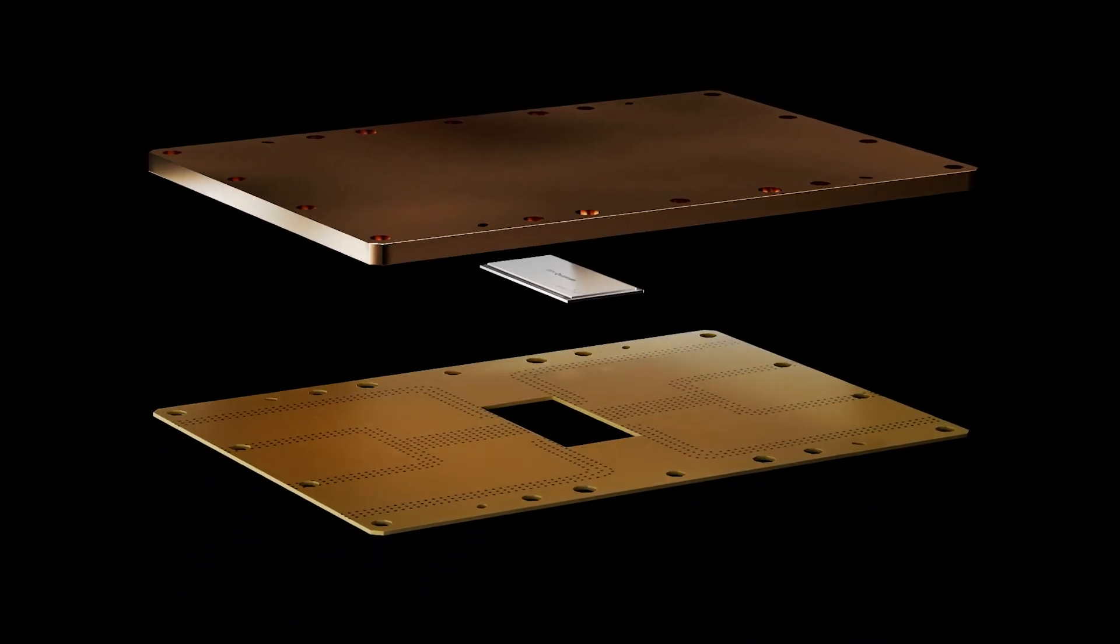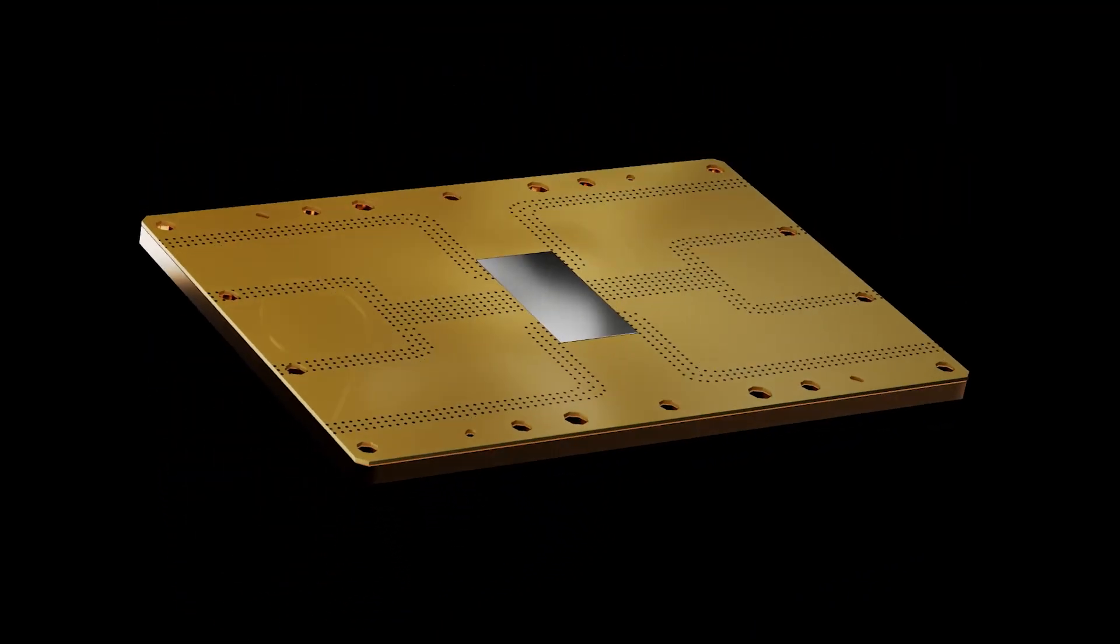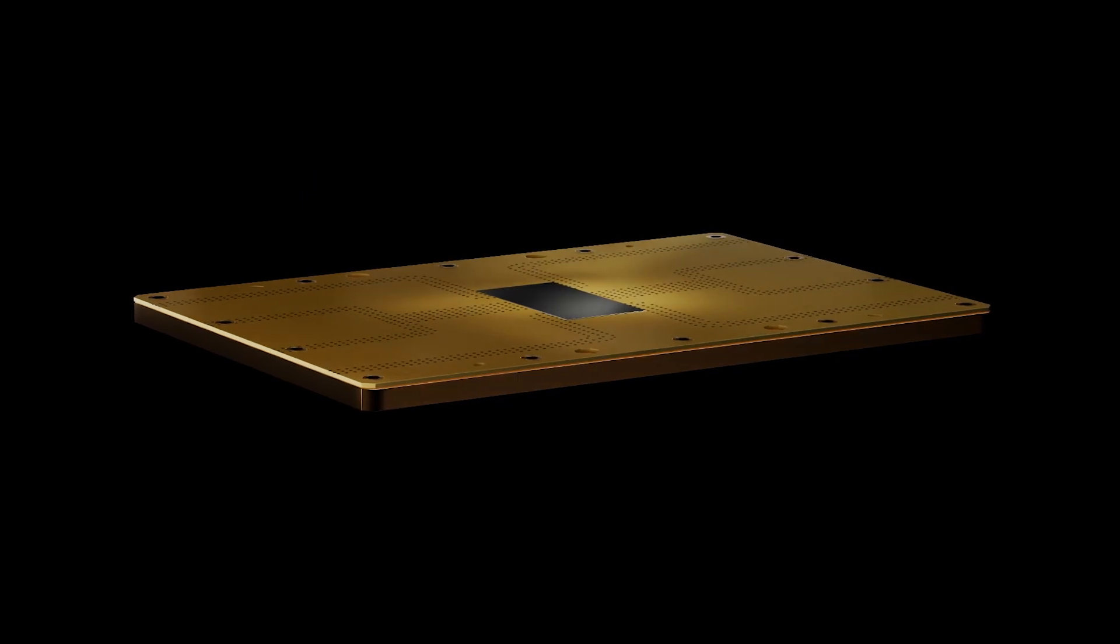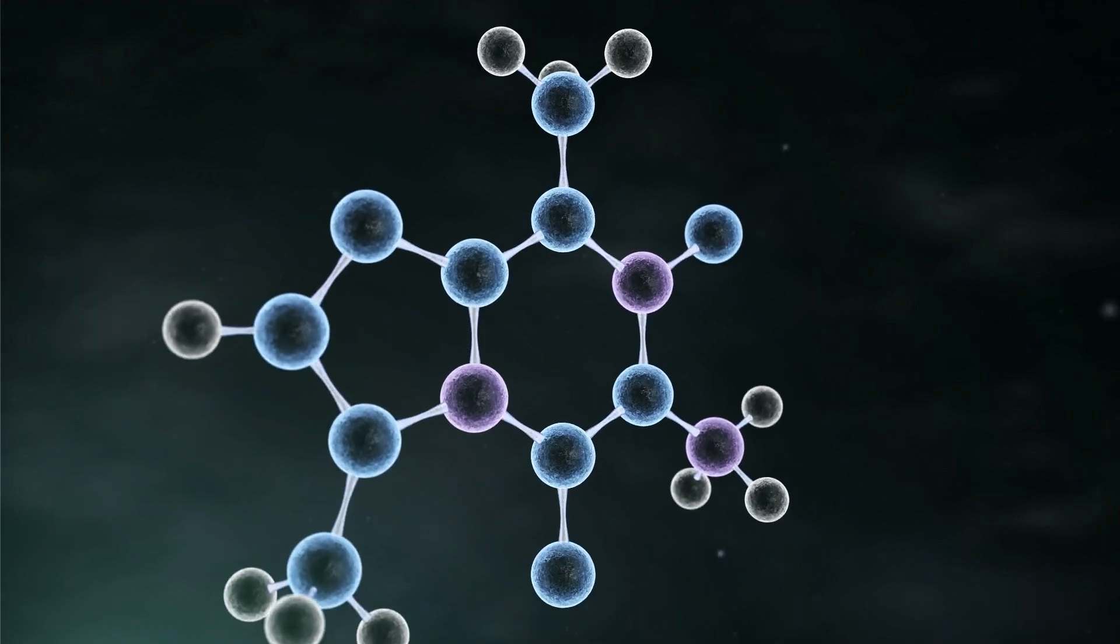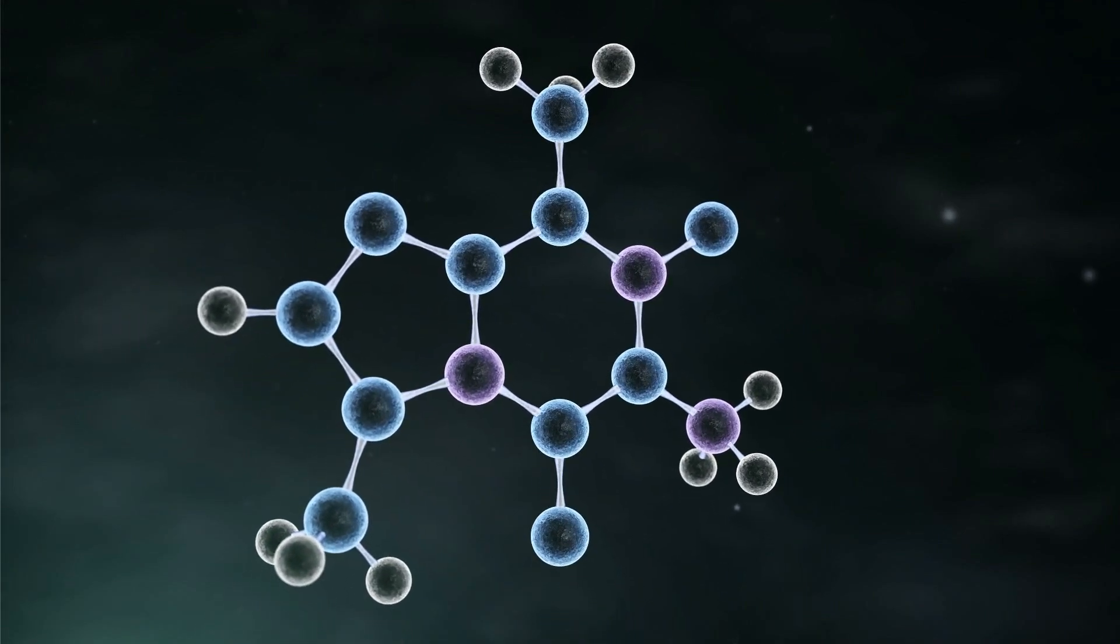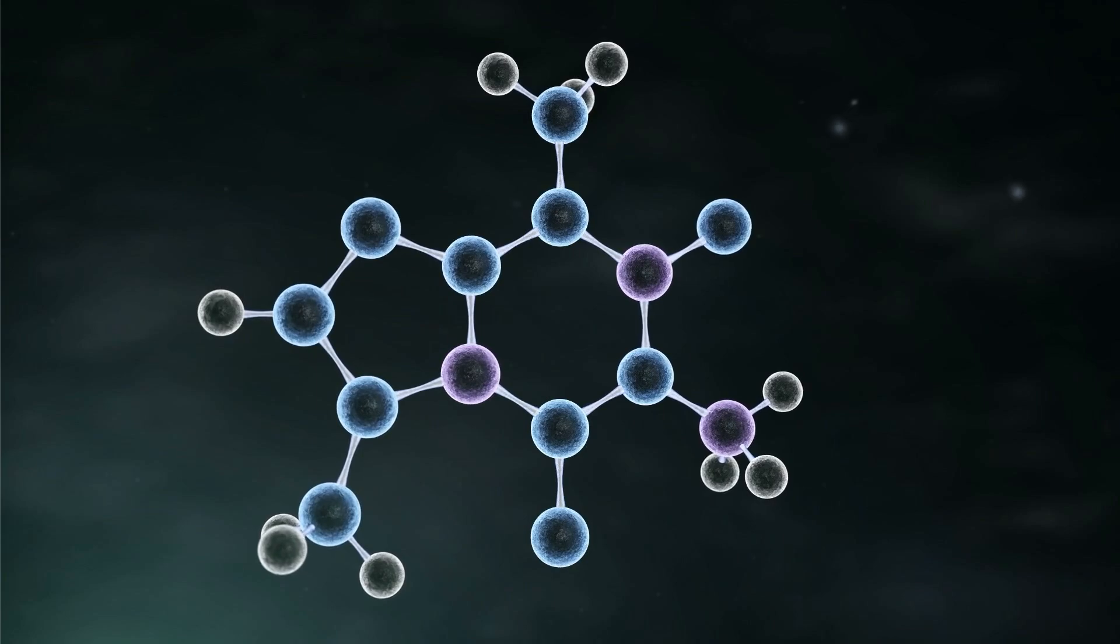If you want to simulate a molecule accurately, you need to simulate quantum mechanics. Specifically, you need to accurately simulate the electrons involved in the chemical bonds that make up the molecules. Generally, the way these simulations work is by taking a molecule's geometry as an input, and then outputting the energy associated with that geometry.